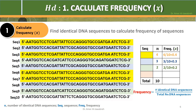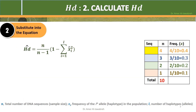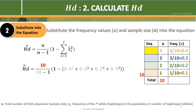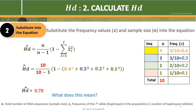Sequence 10 is unique, with an X of 0.1. Step 2: Substitute the frequency values X and sample size N into the equation. HD-hat equals 0.78.